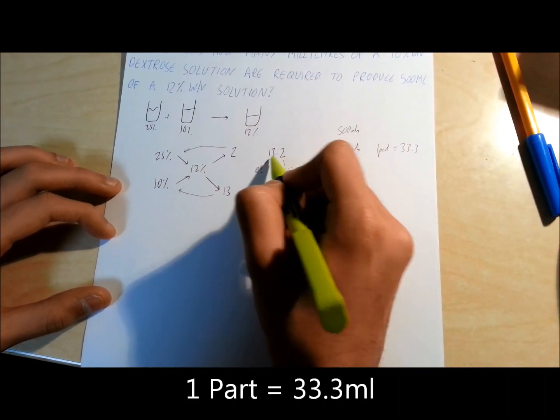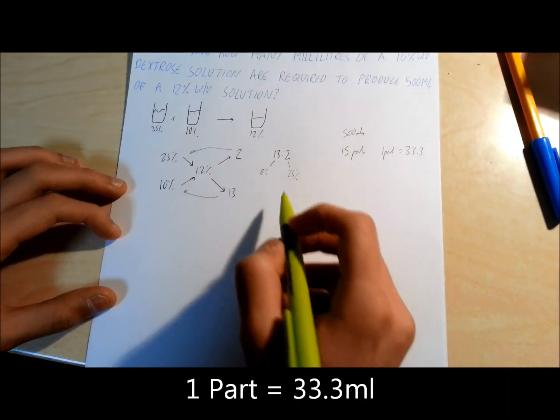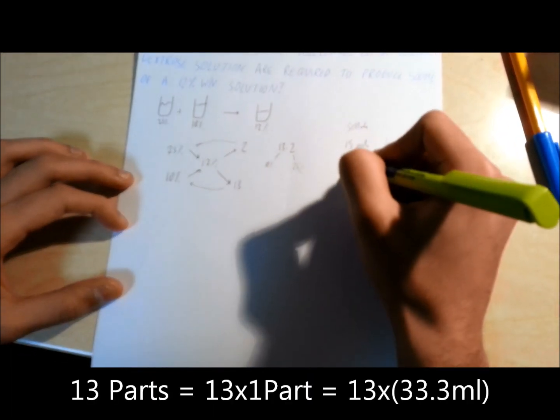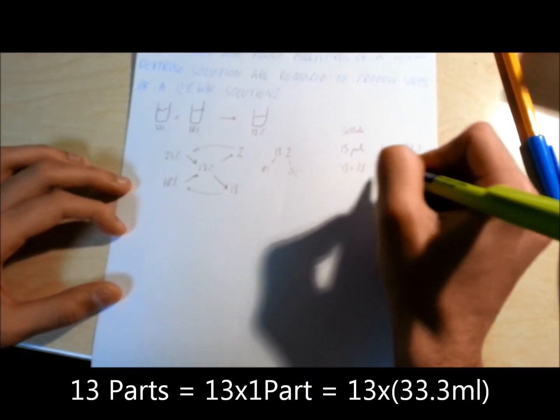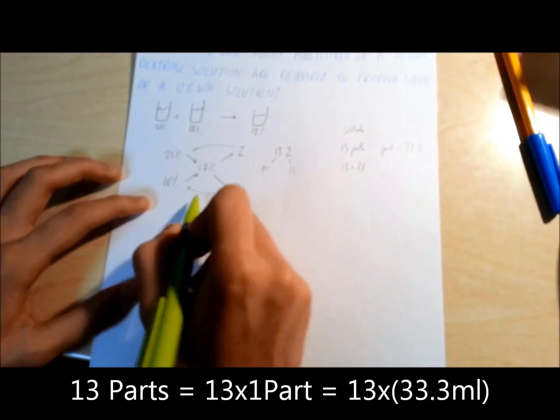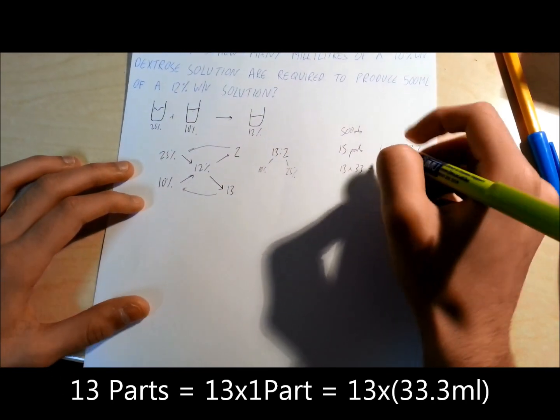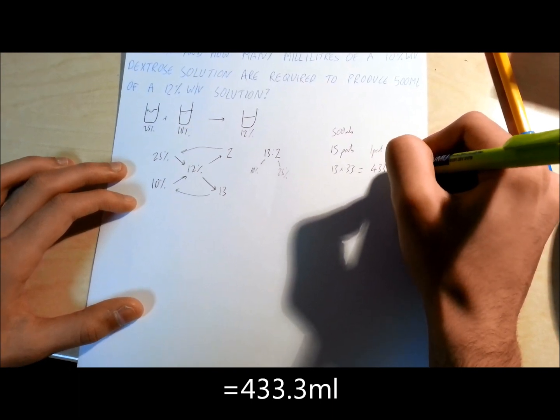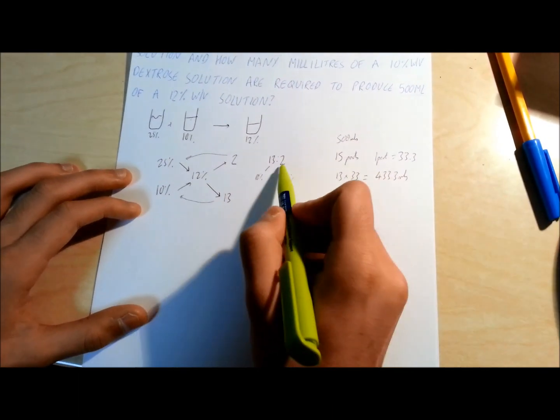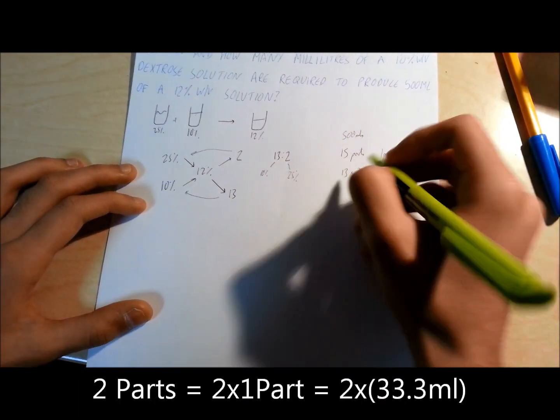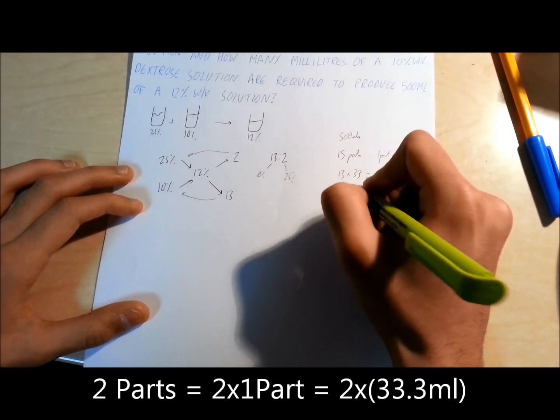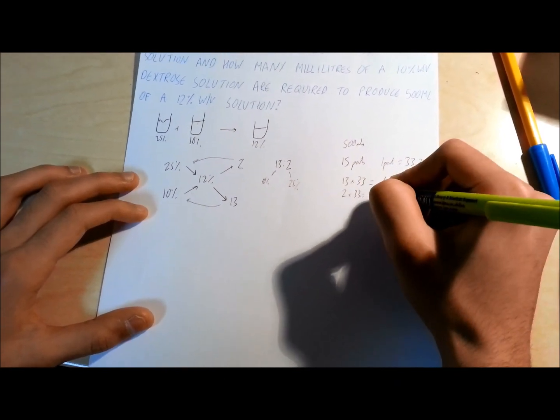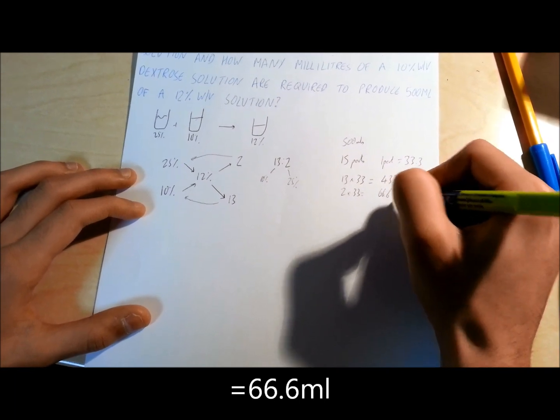So once you have one part, you can work out the following respective parts for each solution. So 13 times one part for the 10% solution is 433.3 mils. Similarly, with the two part for the 25% solution, 2 times 33 is 66.6 mils solution.